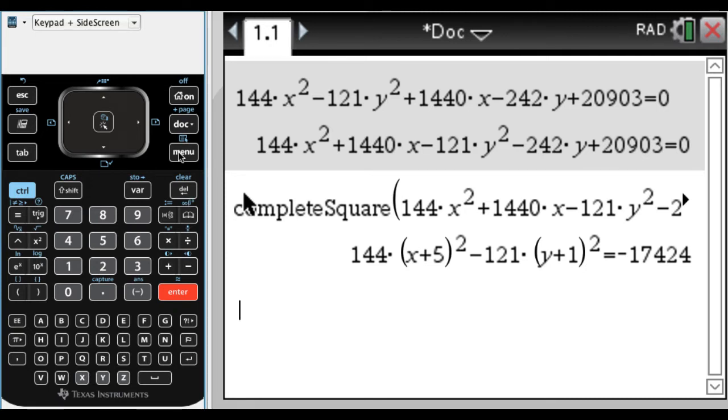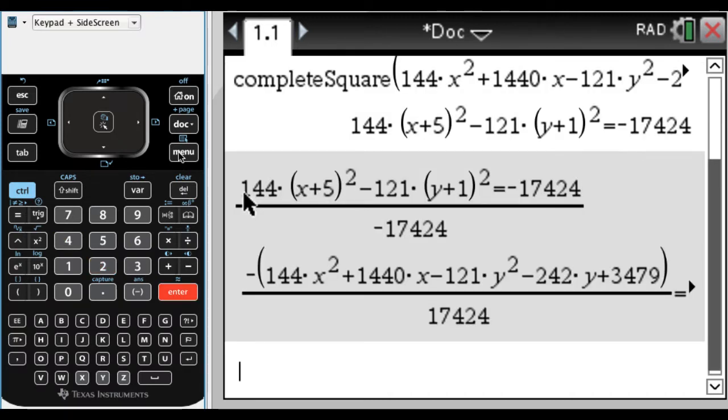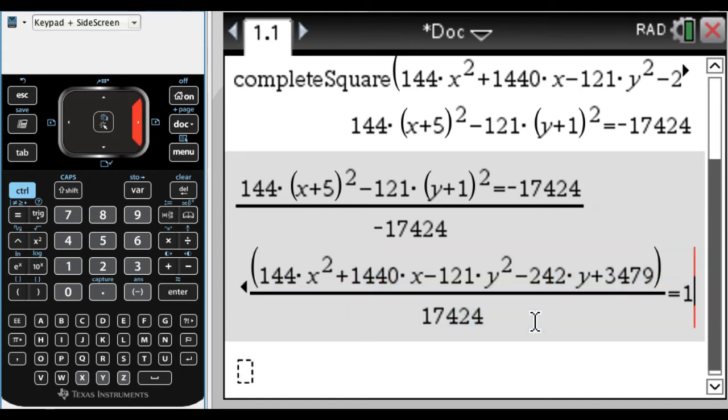What I'm going to do now is just divide through by the right-hand side of this, so negative 17424, and press enter. The problem is when you do that, you can see it kind of uncompletes the square. But it does equal 1, which we wanted.